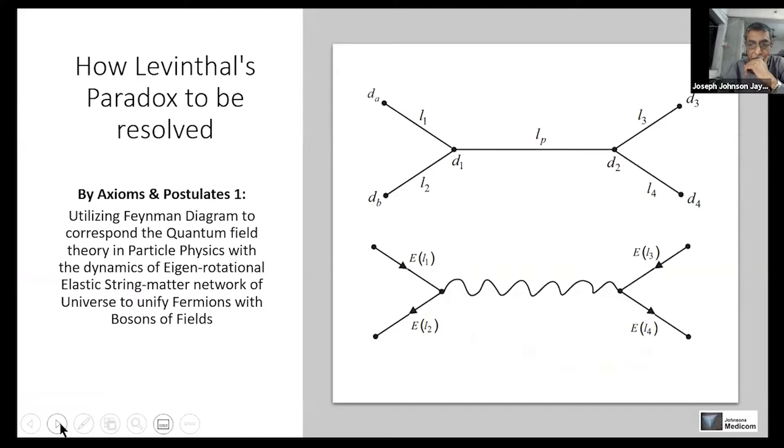So how this paradox can be solved? To resolve this time paradox, a string-matter-universe paradigm has been described. This paradigm needs, for the integration of postulates of this paradigm with the existing physical principles, Feynman diagrams are used to correspond most of the postulates of this quantum field theory in particle physics.